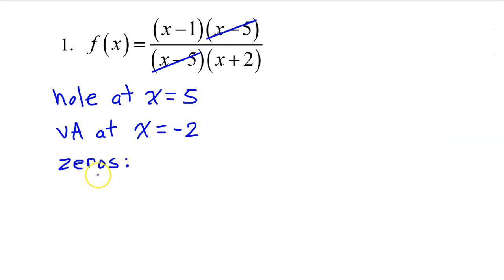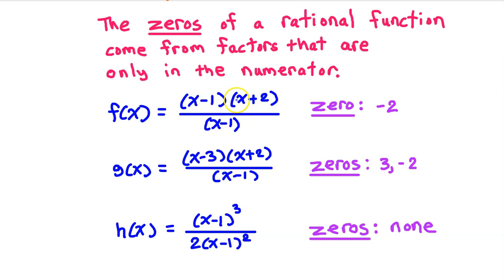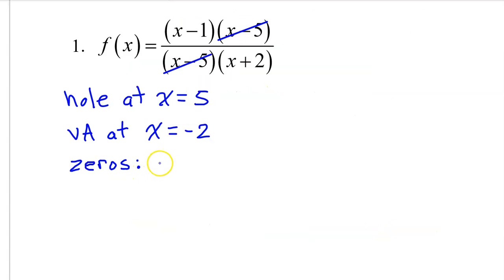Let's discuss the zeros as well. Remember that the zeros of a rational function come from factors that are only in the numerator. f(x) will have a zero of 1 because x minus 1 is the factor that is only in the numerator.